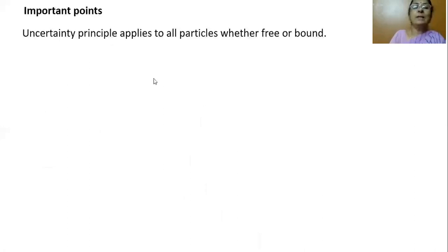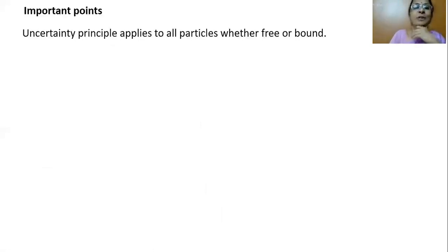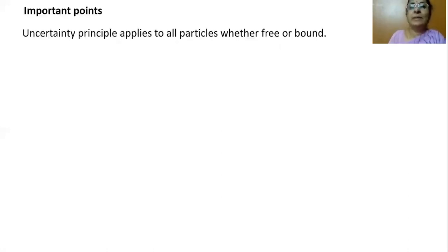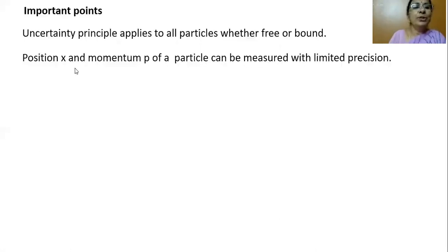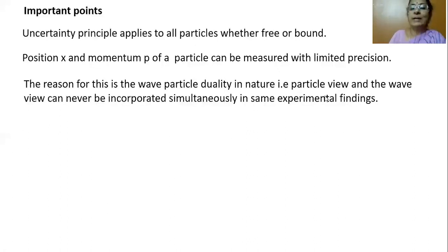Some important points about the uncertainty principle: it applies to all particles whether free or bound. For example, an electron can be free from the atom by applying ionization energy, or it can be bound inside the atom — in both cases the principle applies. The position and momentum of a particle can be measured simultaneously but with limited precision only, due to wave-particle duality, where the particle and wave views cannot be incorporated simultaneously in the same experimental findings.